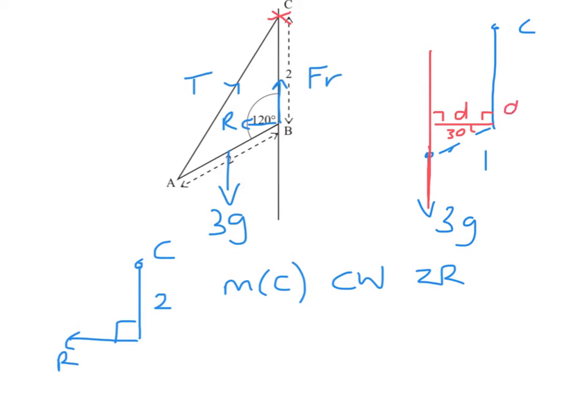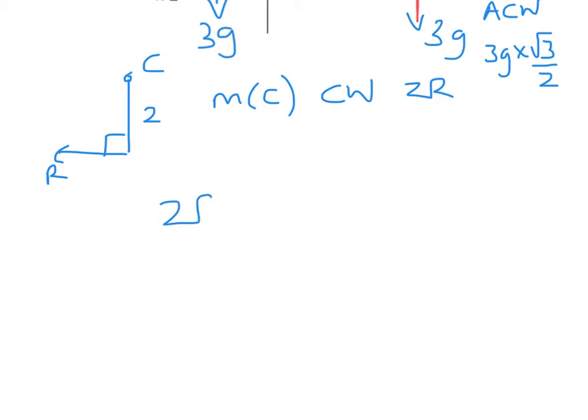The length we are along it is 1, so I can see that d is cos 30 which is root 3 over 2. That means that the 3g will have an anticlockwise moment of 3g times root 3 over 2. I can now bring these together: 2R has to equal 3g times root 3 over 2, so R will be 3g root 3 over 4, which is 12.7 newtons if you want to give a decimal answer.